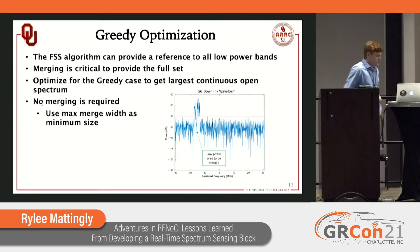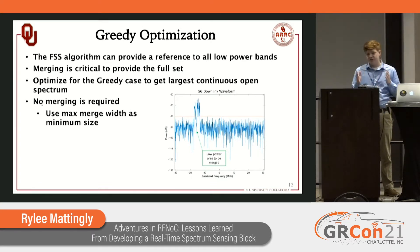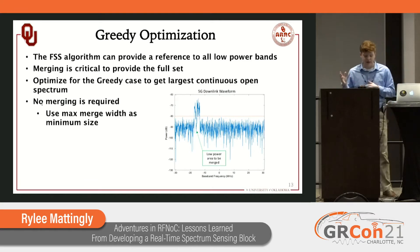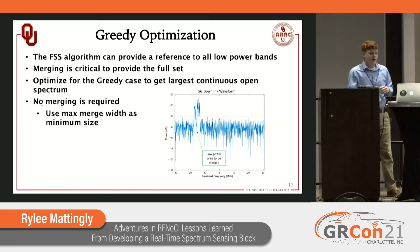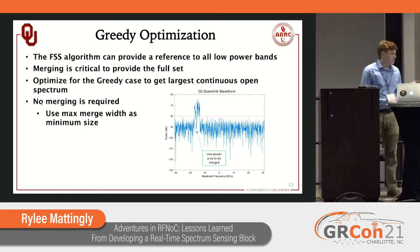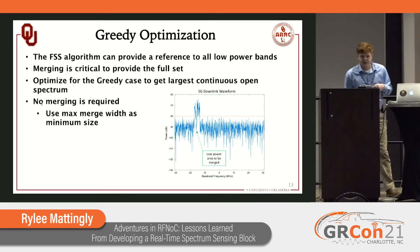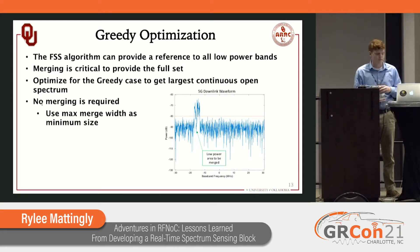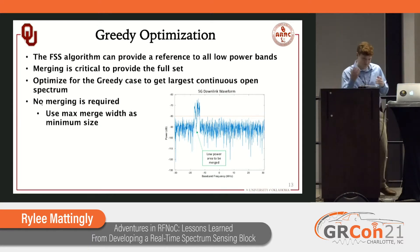The FSS algorithm can provide a reference to all of the low power bands in a specific frequency frame. Merging is critical to provide that full set, while also not bogging down any later optimizations. But we actually want to optimize for the greedy case, which gives us the widest continuous open spectrum. This also allows us to get rid of the merging, because if you would merge away that specific solution band, then it's obviously not the largest.